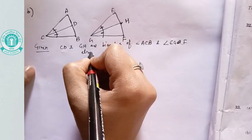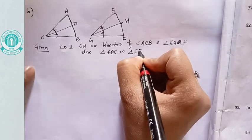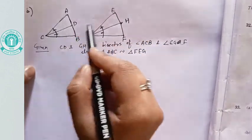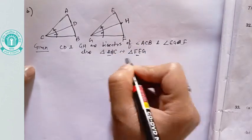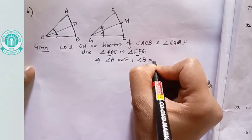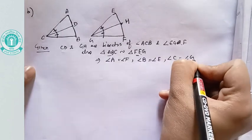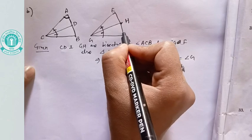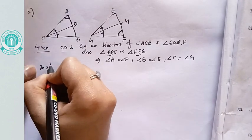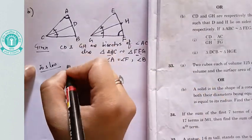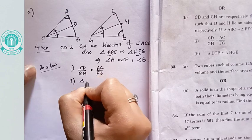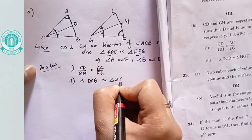Given: CD and GH are bisectors of angle ACB and angle EGF. Also, triangle ABC is similar to triangle FEG. From this similarity, the sequence A, B, C corresponds to F, E, G — meaning angle A equals angle F, angle B equals angle E, and angle C equals angle G. Call these equation 1.